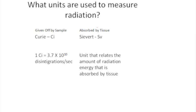So the types of units that are used to measure radiation, there's two different types of units. The curie is the type of unit that's used to measure how much radiation is coming off of a radioactive sample, and one curie equals 3.7 times 10 to the 10th disintegrations per second. So it doesn't matter whether it's alpha, beta, or gamma radiation, it's what's counted on a scintillation counter per second.